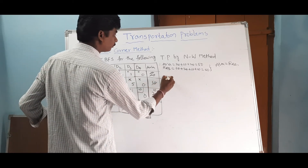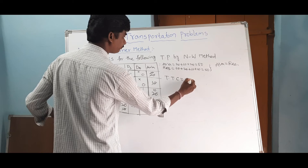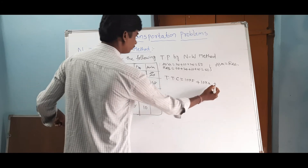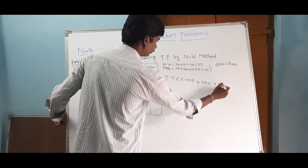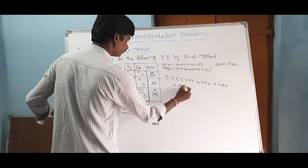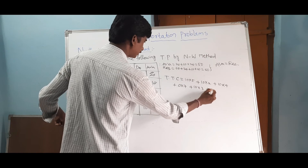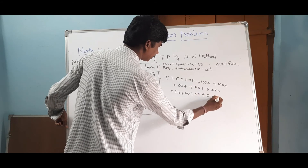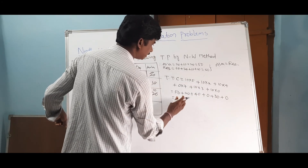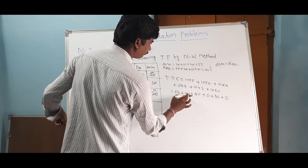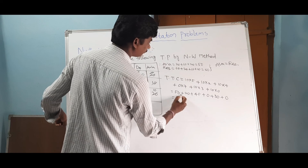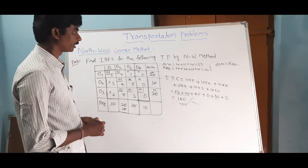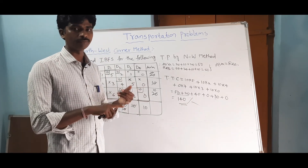Total transportation cost equals 10×5 + 10×2 + 10×4 + 0×7 + 10×3 + 10×0, which gives 50 + 20 + 40 + 0 + 30 + 0 = 140. Total transportation cost is 140. This concludes both the balanced and unbalanced transportation problem examples.